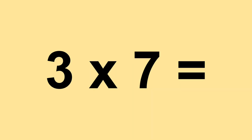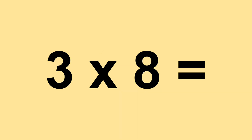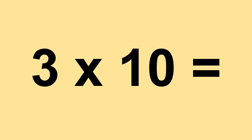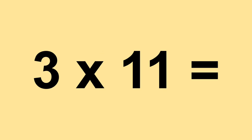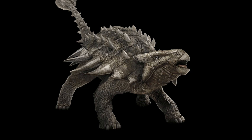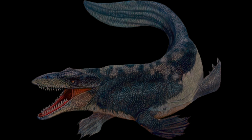Three times seven equals twenty-one. Three times eight equals twenty-four. Three times nine equals twenty-seven. Three times ten equals thirty. Three times eleven equals thirty-three. Three times twelve equals thirty-six.